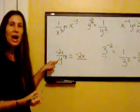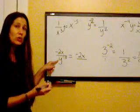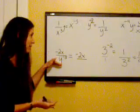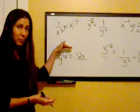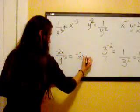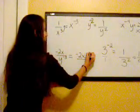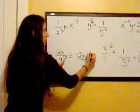However, the y to the negative 3, that has a negative exponent, so we can change the location from the denominator up to the numerator. When it changes location, then negative 3 becomes a positive 3.